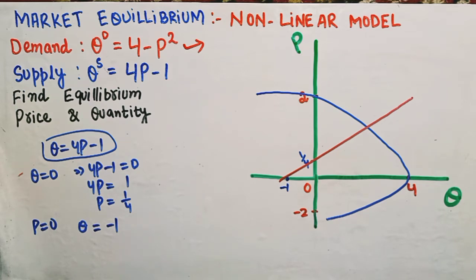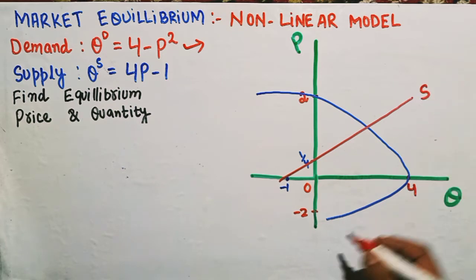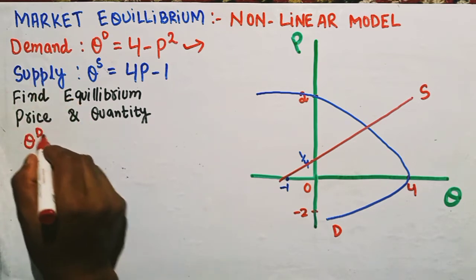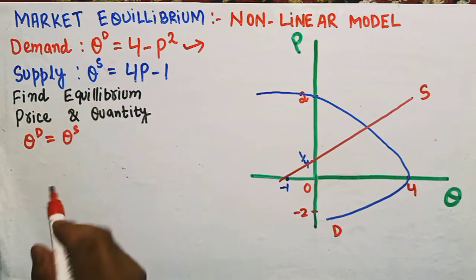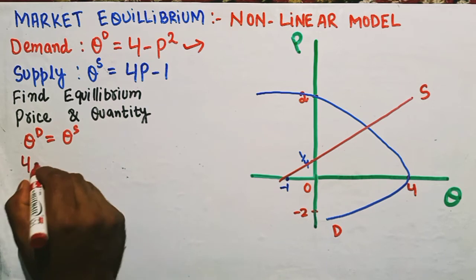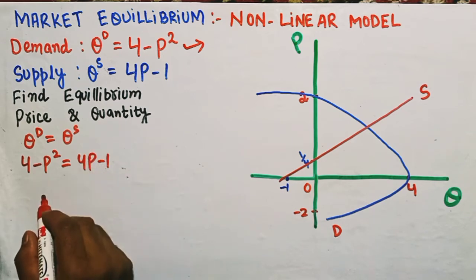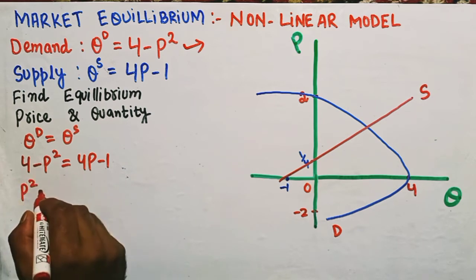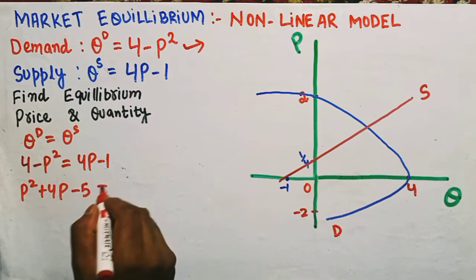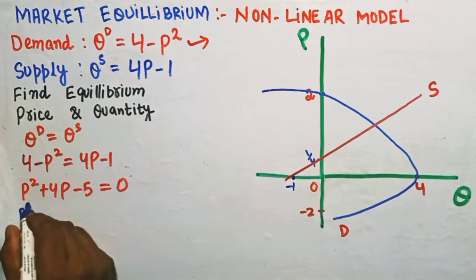The supply function is a straight red line and the demand curve is the blue parabola; they intersect at equilibrium. Equilibrium occurs where Qd = Qs, so 4 - P² = 4P - 1. Rearranging: P² + 4P - 5 = 0.